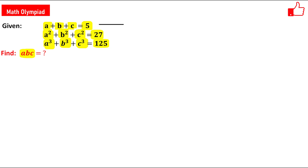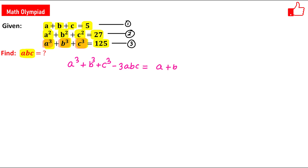Now let us say this is equation 1, this is equation 2, and this is equation 3. Now I am going to use an algebraic identity to solve this problem. The identity is: a cubed plus b cubed plus c cubed minus 3abc equals (a plus b plus c) times [(a plus b plus c) squared minus 3 times (ab plus bc plus ca)].